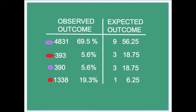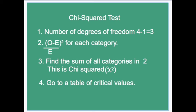We can employ the chi-squared test to demonstrate how significant this outcome is and that it is not just due to random experimental variation. To carry out the chi-squared test, we first need to determine the number of degrees of freedom. Because there are four categories, the number of degrees of freedom is four minus one, equals three. Then we find the difference between the observed values and the expected values, square those, and divide by the expected value. Then we find the sum of all categories, which gives us the value for chi-squared. Then we go to the table of critical values.